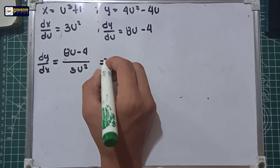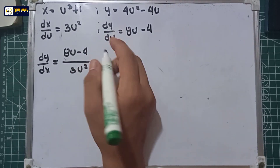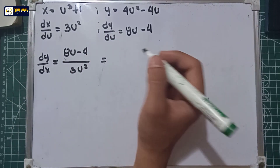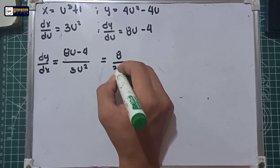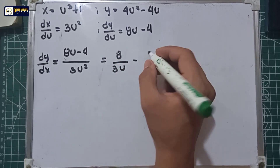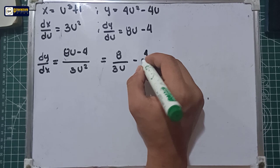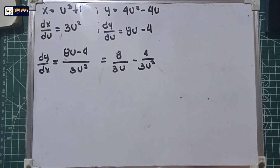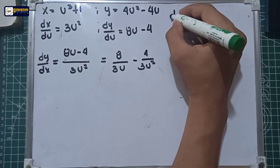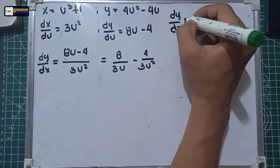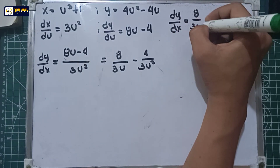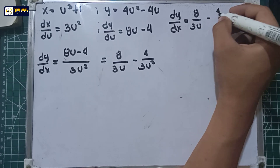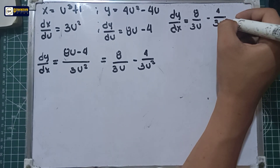Let us simplify. Can we simplify this one? Yes, we can. So this is also equal to 8 over 3u minus 4 over 3u squared. So dy over dx is equal to 8 over 3u minus 4 over 3u squared.